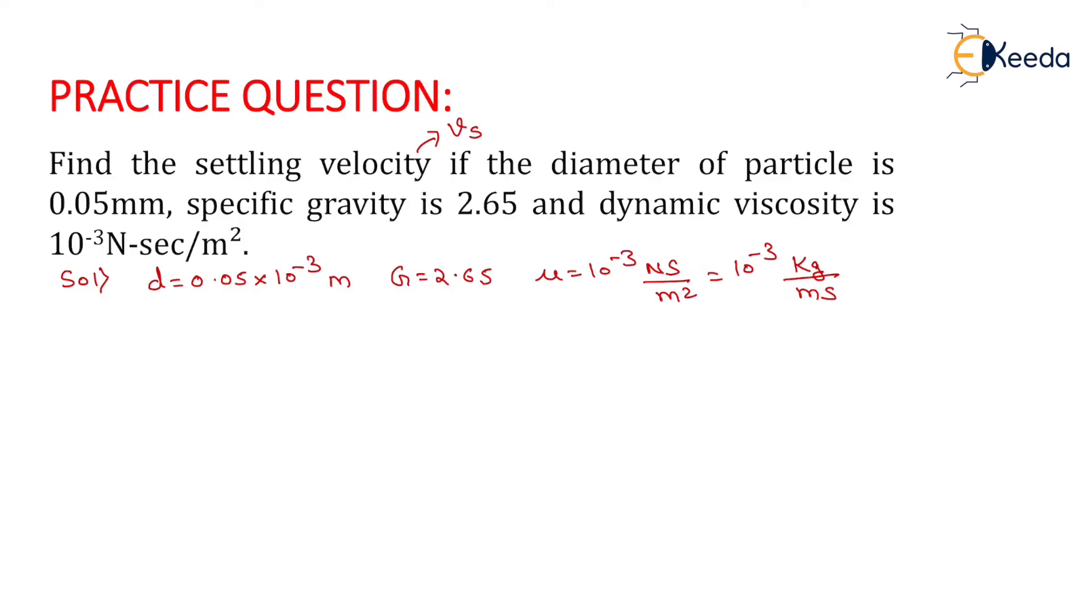Now we find the settling velocity. The formula is: Vs = (ρ g d²)/(18μ) × (Gs - 1), where ρ is the density of water = 1000 kg/m³, and g is acceleration due to gravity = 9.81 m/s².